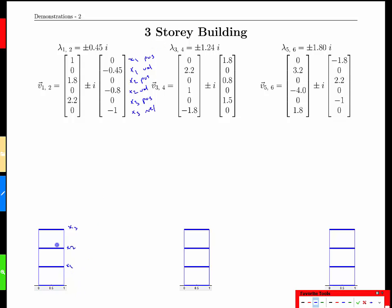In this last demonstration, we consider a three-story building where we represent the horizontal displacement of each floor by x1, x2, or x3, moving from the ground upwards.